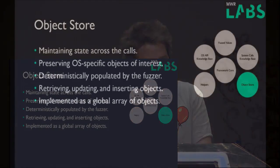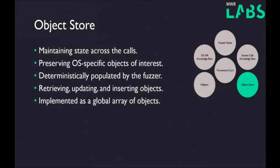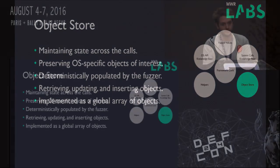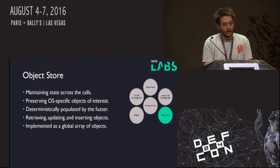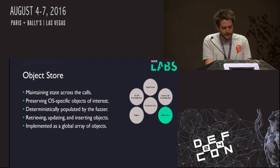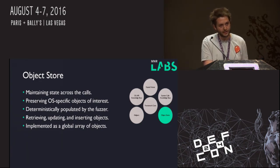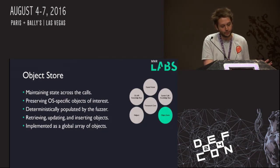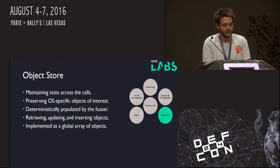The next part is the object store. The object store is used to maintain state across a fuzzing run, and it stores OS-specific objects of interest — currently handles in Windows and file descriptors in Unix systems. It's implemented as just a global array of structures, deterministically populated by the fuzzer, which is quite important for when you want to reproduce crashes. It's quite easy to retrieve, update, and insert new objects into the object store.